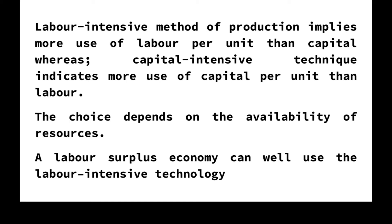For example, you can produce cotton cloth using a hand loom, power loom, or automatic loom — where a hand loom requires more labor and automatic looms need high power and capital investment. Hence, society must choose between the techniques to produce the commodity. Similarly, for all goods or services, similar decisions are necessary. The choice depends on the availability of different factors of production and their prices. Usually, a society opts for a technique that optimally utilizes its available resources.